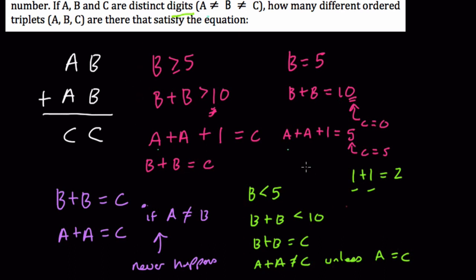When B is less than 5, there are no numbers that work. When B is greater than 5 and you add B, you're going to get a result and a 1. So A plus A plus 1 will be something different. It can't also be C. All right. I hope this helped.